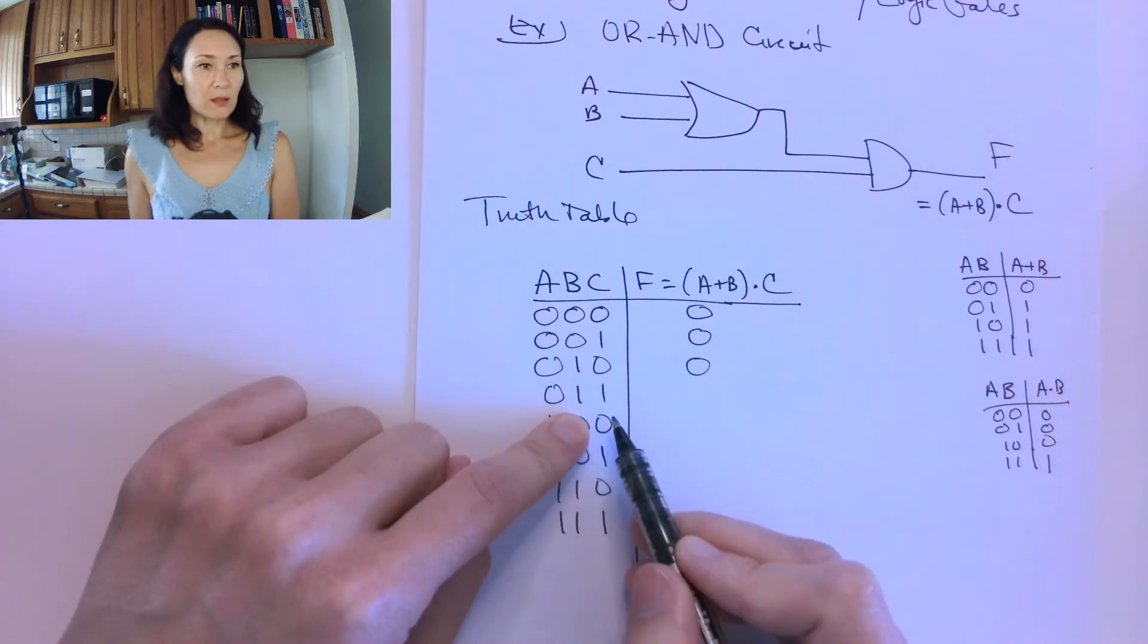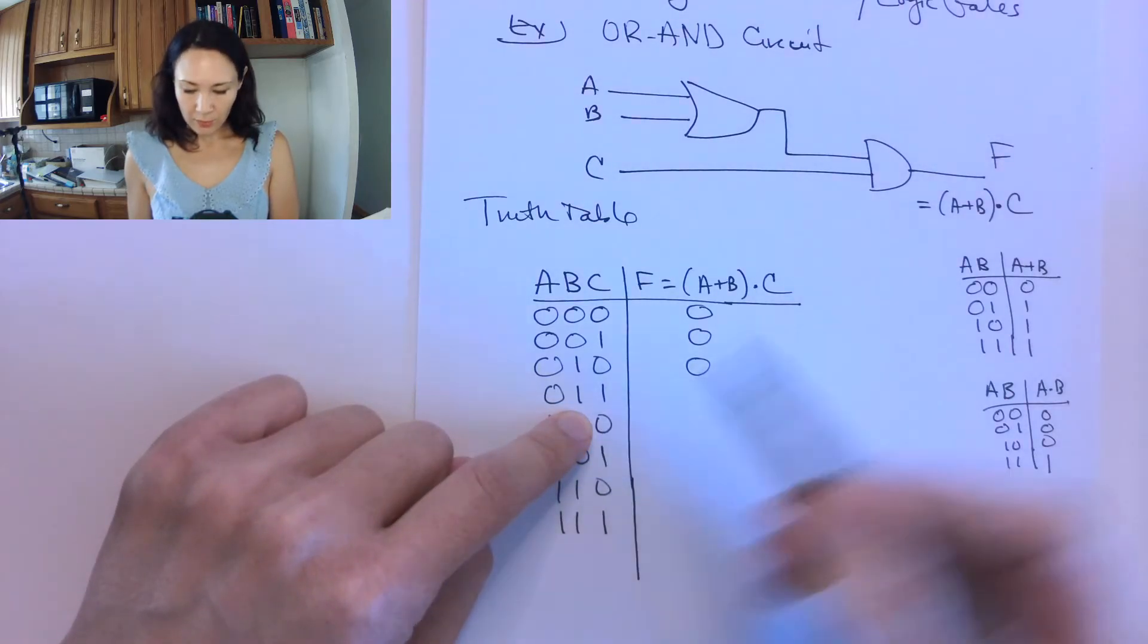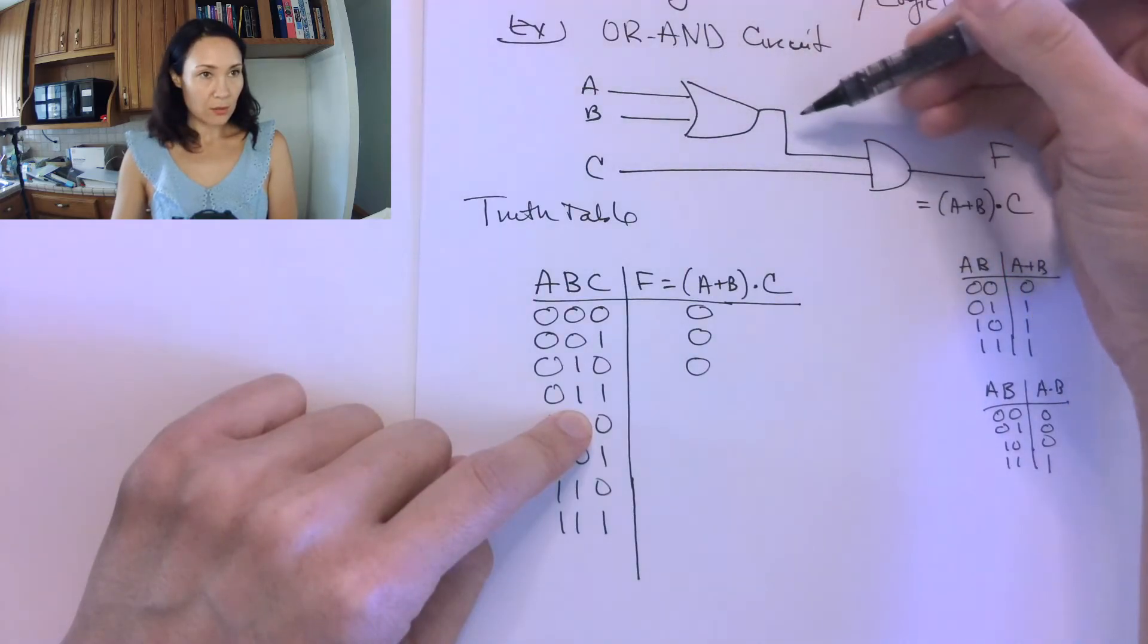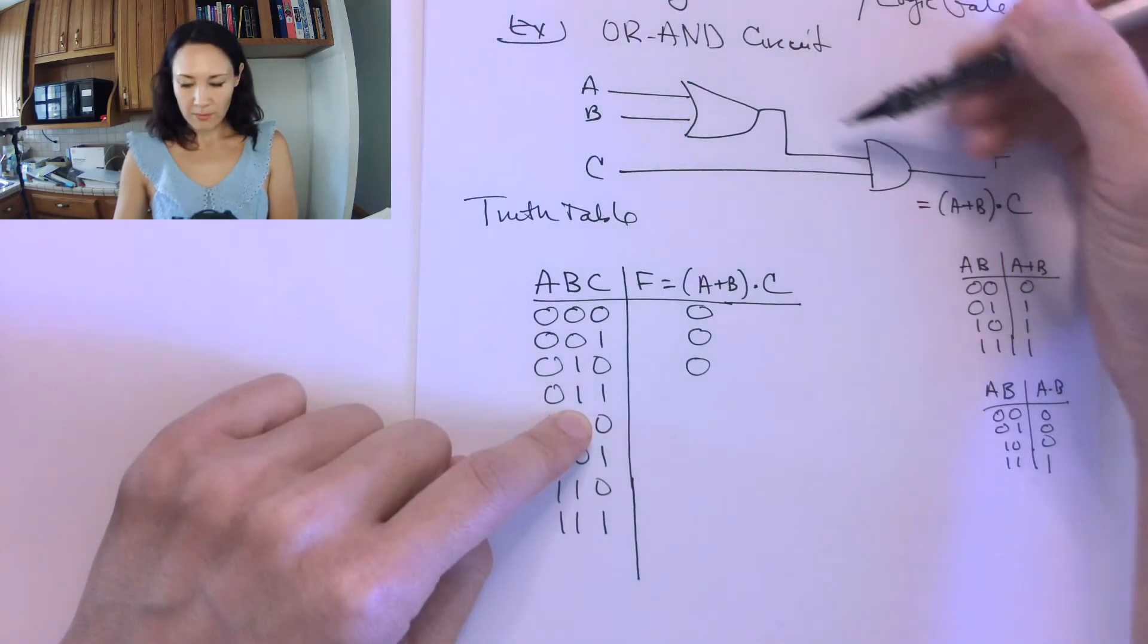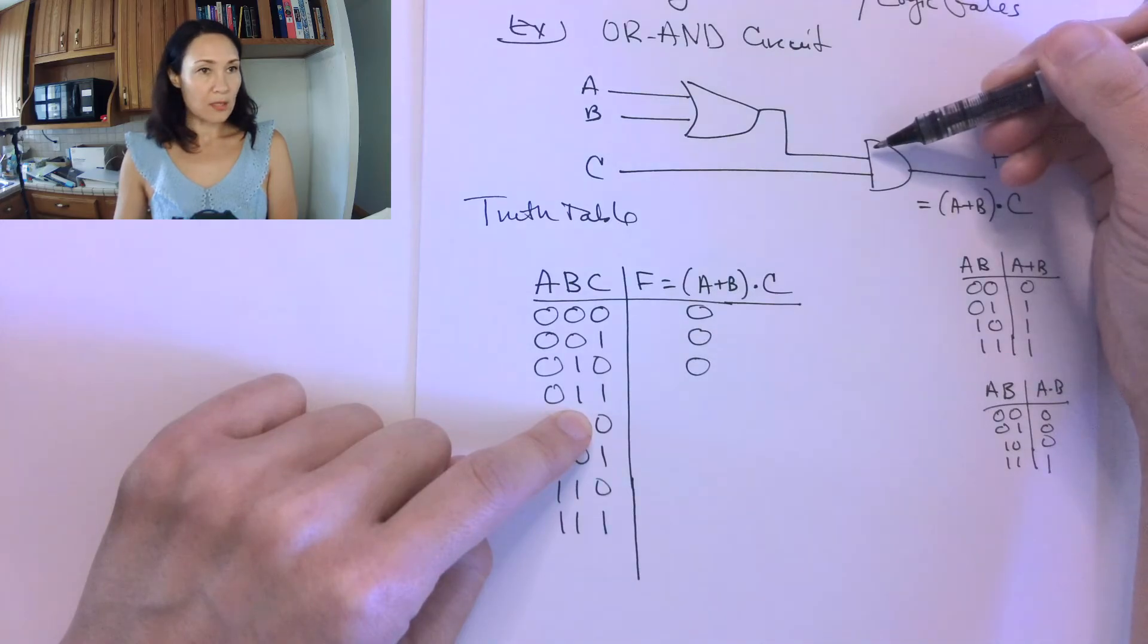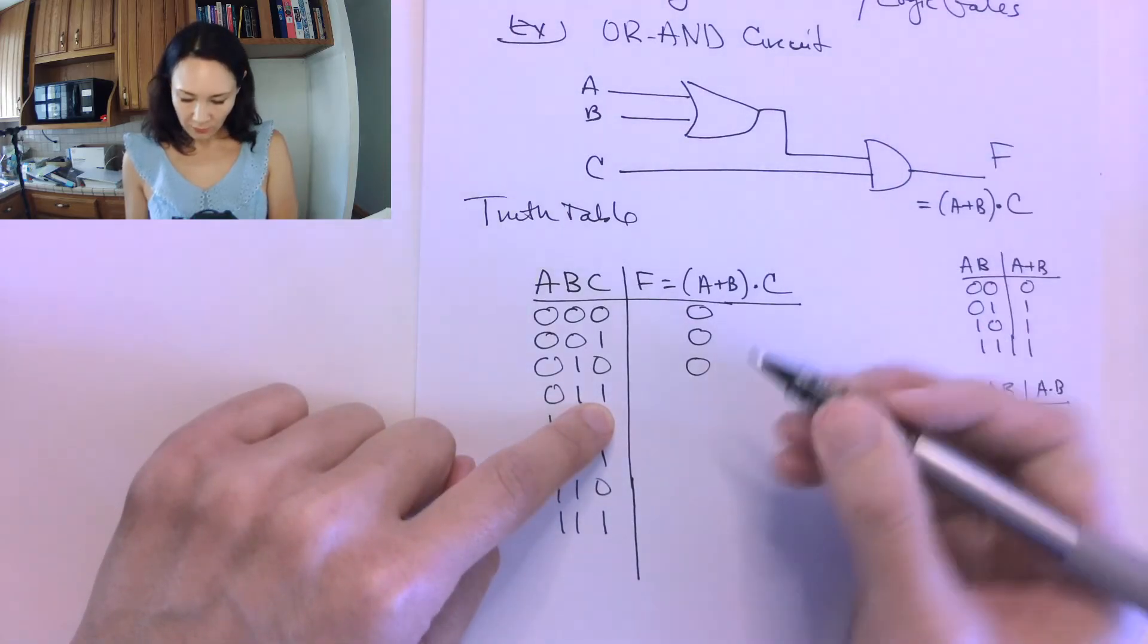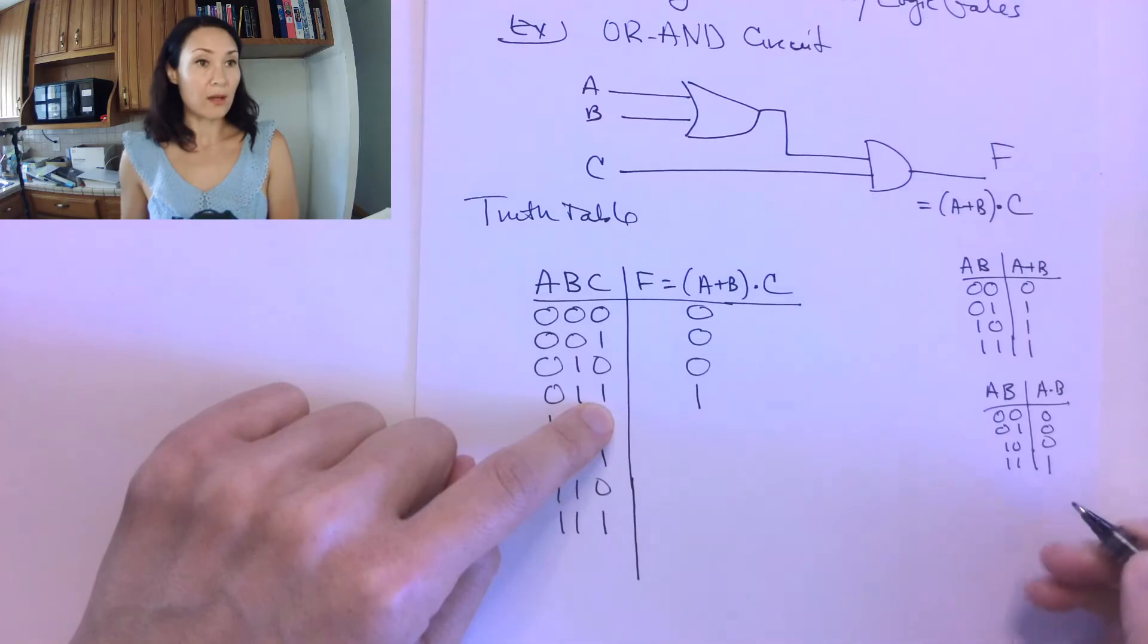But this case, the next one in our input list, we have a 0 and a 1 coming in here. So our output from the OR is going to be a 1. So we have a 1 coming into our AND gate here. The C coming in is also a 1. So now we have a 1 and a 1. So we finally have an output of 1 on F.